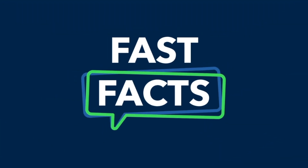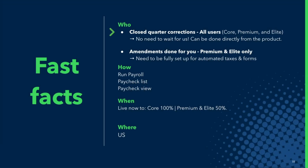Some fast facts: doing close-quarter correction is available to all QuickBooks Online SKUs. No need to call us — you can do everything directly from the product. Amendments done for you is a special offering for premium and elite QuickBooks Online customers. Note that in order to use this, you need to be set up for automated taxes and forms.